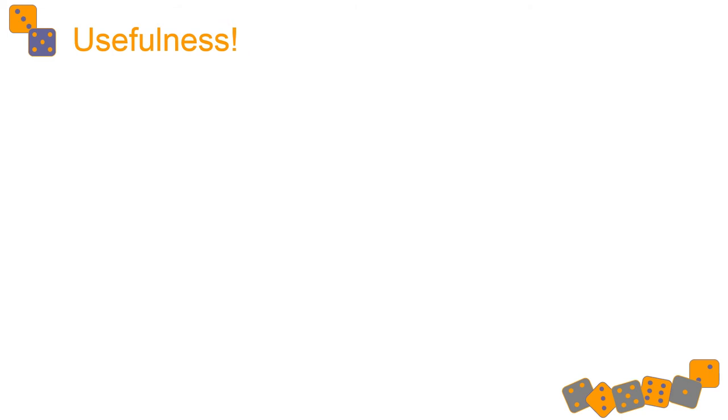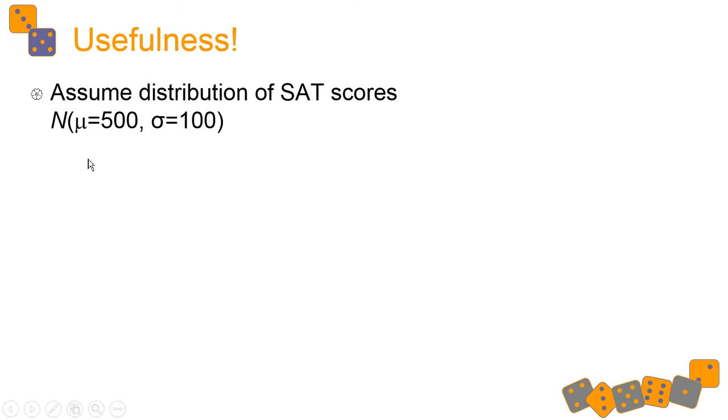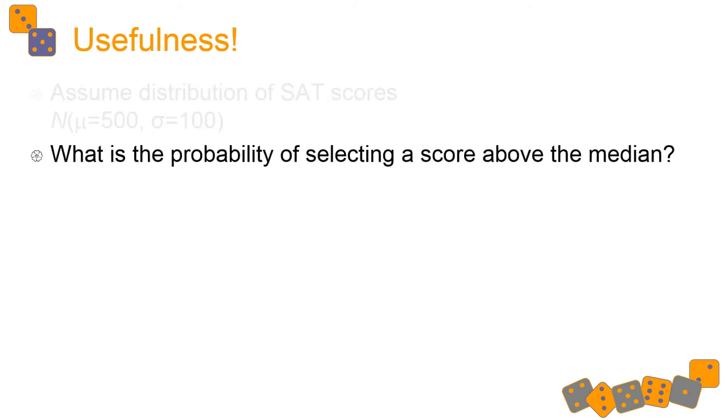So, why is this useful? Let's look at an example, because I'm thinking of SATs. Assume that the distribution of SAT scores looks like this, and it pretty much does. The mean is normal, that's what the n means, with a population mean mu of 500, and a standard deviation, population sigma of 100. That's SAT scores right there. They try and make them that way. They shift around, but let's assume that they're like that. Then what's the probability of selecting a score above the median?